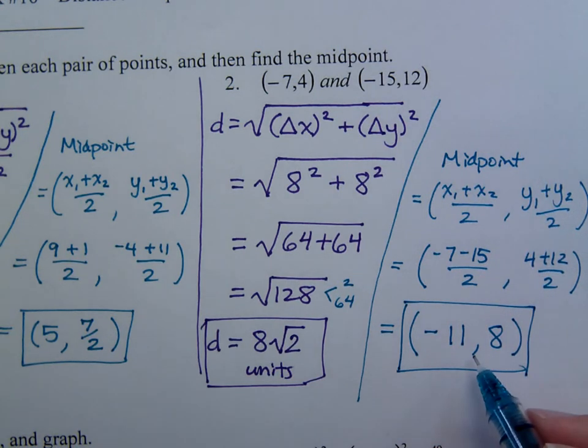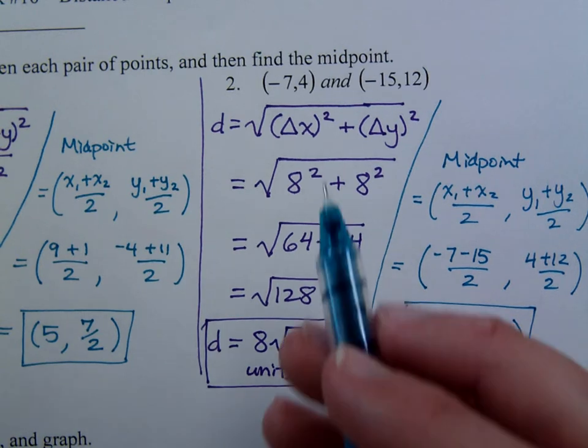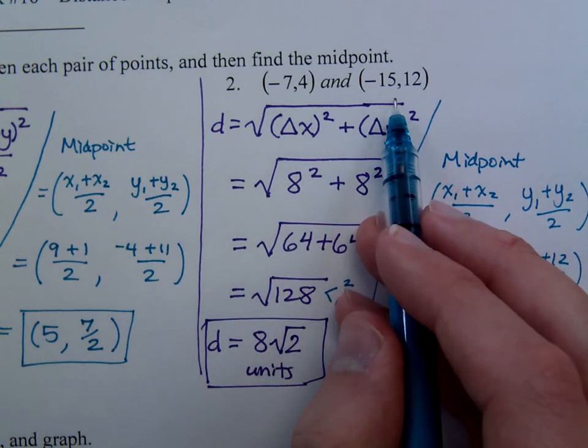So this would be the coordinates, or these would be the coordinates of the point that's halfway between negative 7, 4 and negative 15, positive 12.